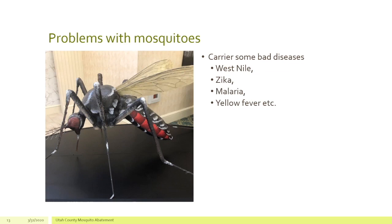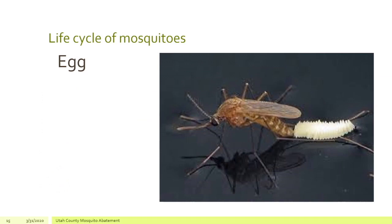The problem with mosquitoes is they carry some bad diseases that affect us and make us sick. These include West Nile, which we have here, and Zika, which you've heard about, and malaria, and also yellow fever that comes from South and Central America. These and other diseases are carried by mosquitoes, and that's one of the reasons why we need to control their populations.